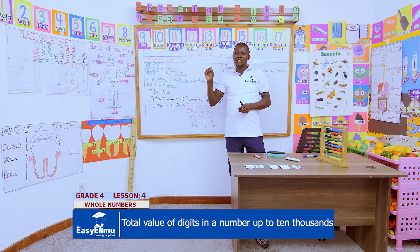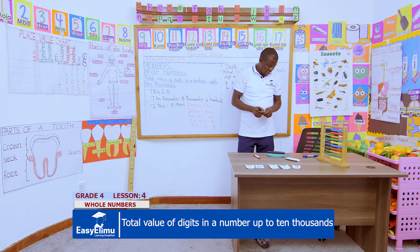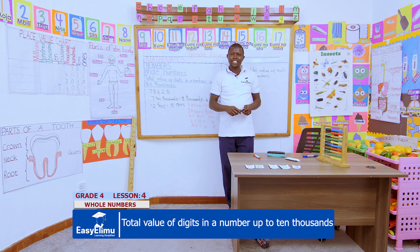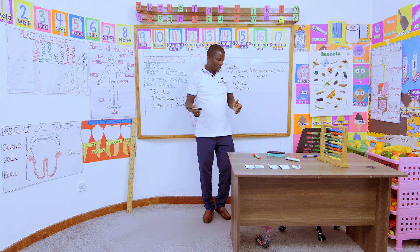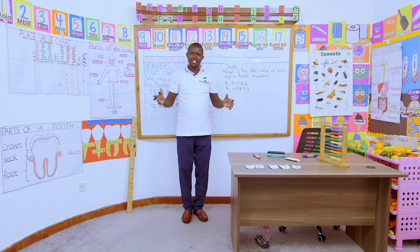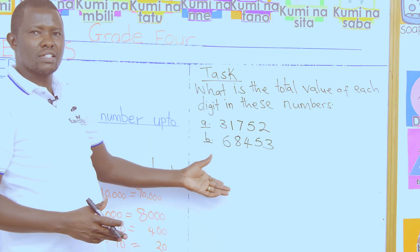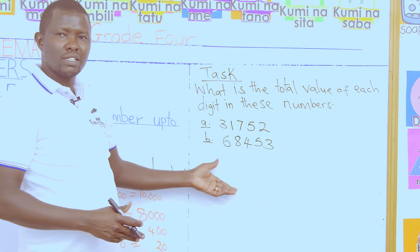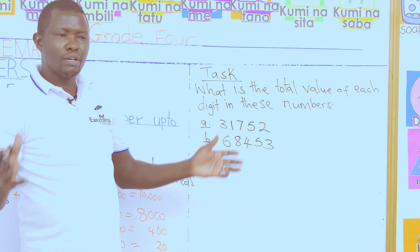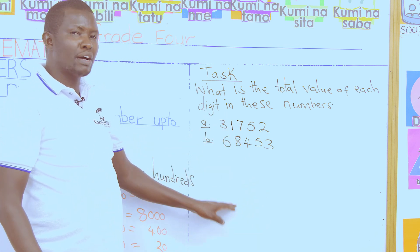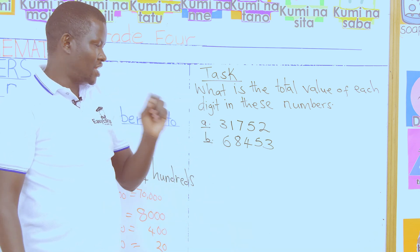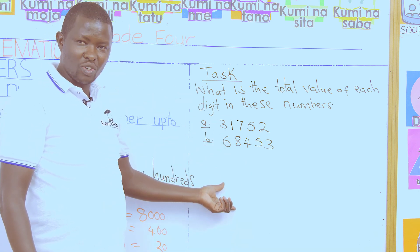When you go home, come up with four numbers — arrange five digits to form each number — then make sure you find and attach the total value of each digit in every number that you have formed.